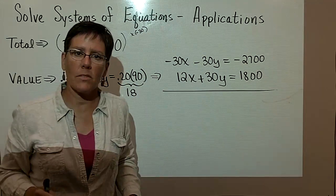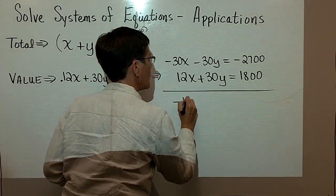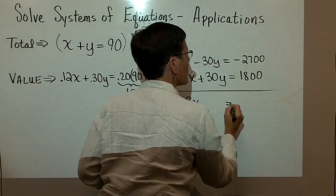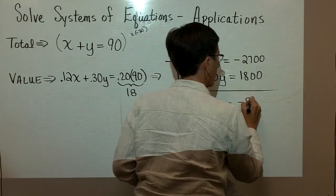And I'm going to solve this system by elimination. So what I'll have right here is negative 18x. The y terms disappear. And then when I combine those two, I'll get negative 900.